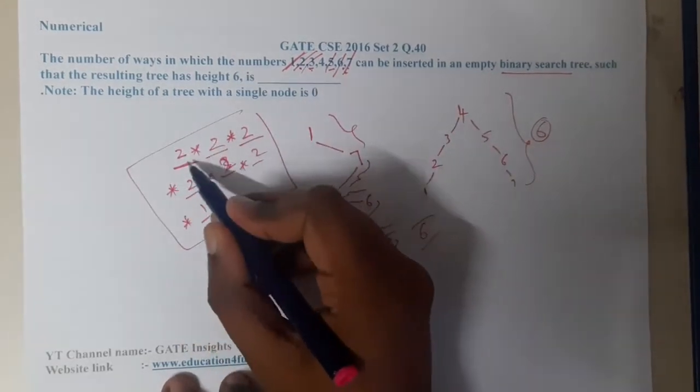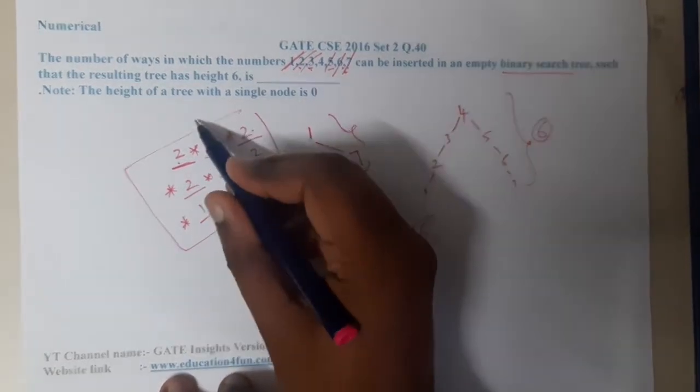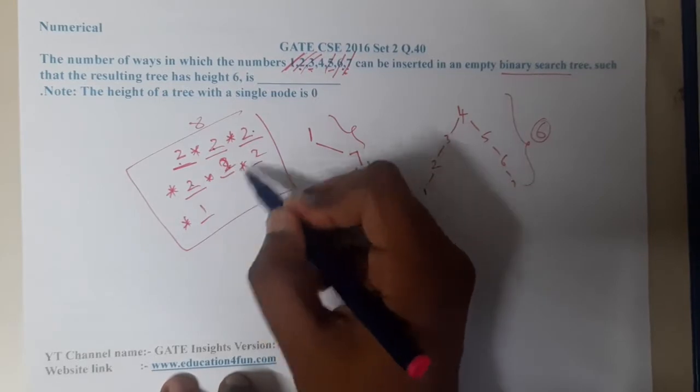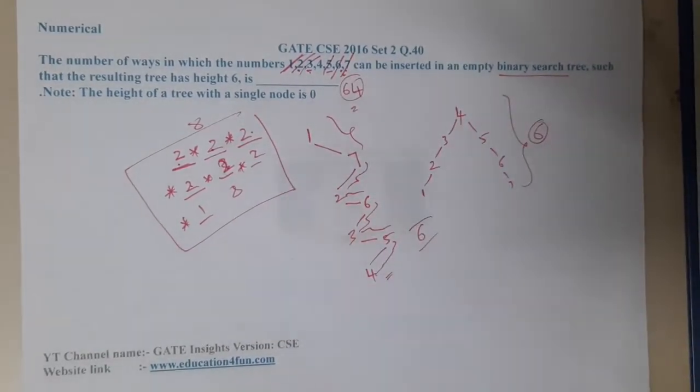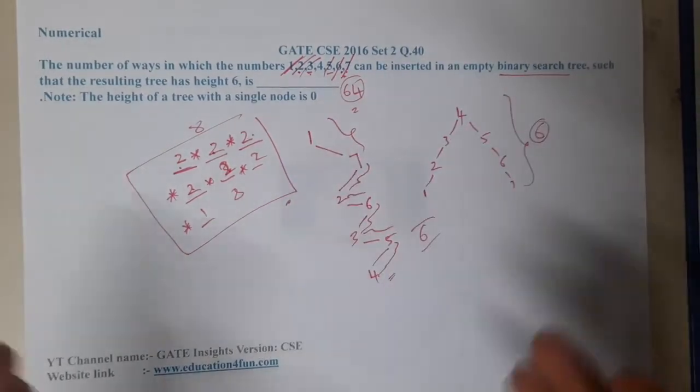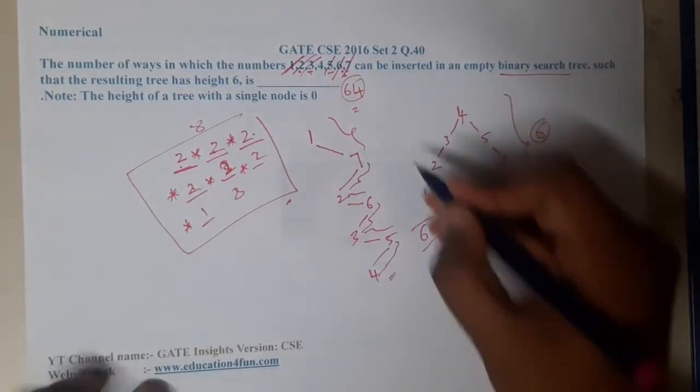So with this kind of approach you can reach to height 6, right? So what is the value? 2 into 2 into 2, that is nothing but 8. 2 into 2 into 2, 8 into 8 is 64. So 64 will be the answer. With a simple logic of permutation and combination, like how many to select, with that logic we were able to solve the question.